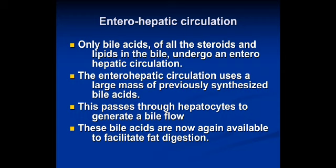About 94% of bile salts secreted are reabsorbed in the small intestine. They enter the portal circulation and pass back to the liver, where they are taken up by hepatic cells and re-secreted into the bile. Small quantities of bile salts are lost in feces. Other substances passing through enterohepatic circulation include thyroxine, vitamin B12, and vitamin D. This circulation occurs around 6 times a day — 2 times for each meal. Only bile acids of all the steroids and lipids in bile undergo enterohepatic circulation.